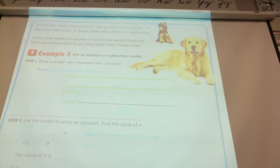To find out how many times as much, use a multiplication model to find out how many more or fewer model the addition or subtraction. Evan's dog weighs 63 pounds. We've already decided that from the other side. Oksana's dog weighs 9 pounds. How much more does Evan's dog weigh than Oksana's dog? So, looking at my thing here, is this a multiplication problem? No.